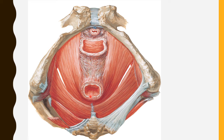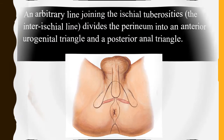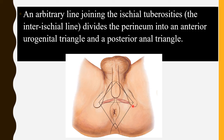This is the inferior view of the female perineum. An arbitrary line joining the ischial tuberosities — called the inter-ischial line — divides the perineum into two different triangles. The diamond-shaped perineum is divided into an anterior and a posterior triangle. The anterior triangle is called the urogenital triangle and the posterior triangle is called the anal triangle.